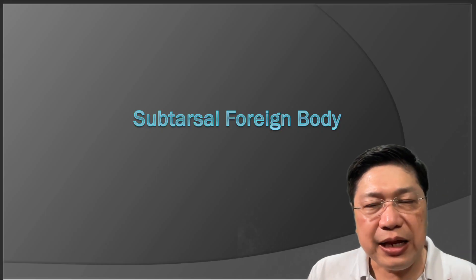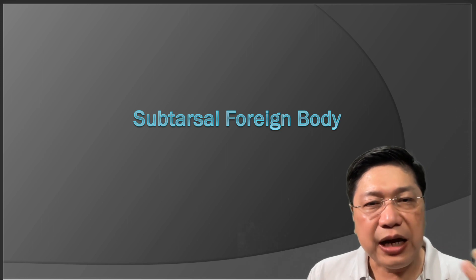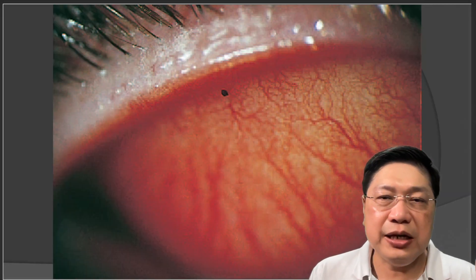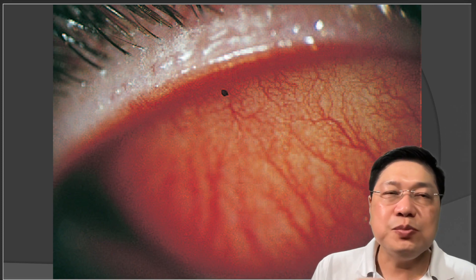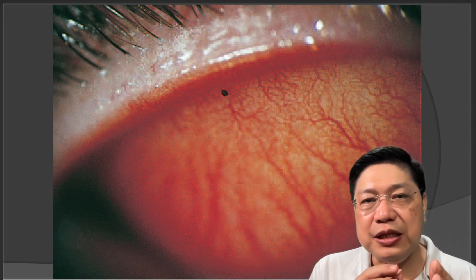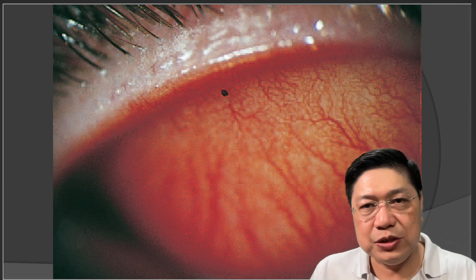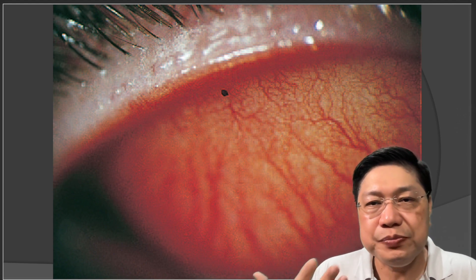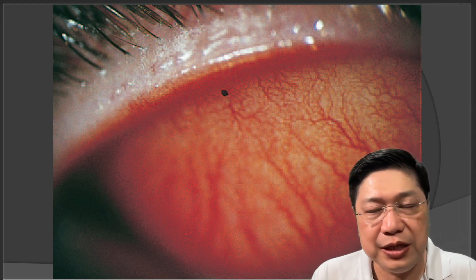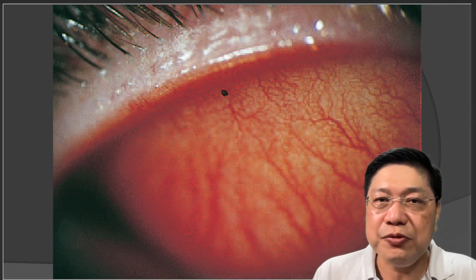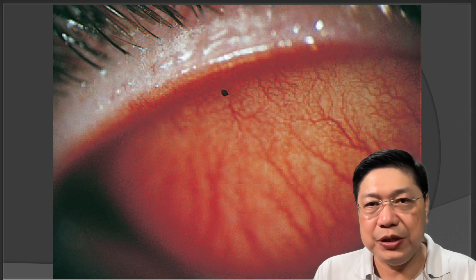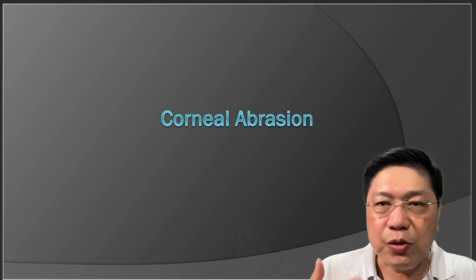Don't just look at the eyelashes — look underneath the eyelids. The eyelids might have some foreign body. In this case, the eyelid was flipped and there was a small metallic material trapped in the lashes. Every time the eye moves, this material scratches against the patient's cornea, causing a lot of damage. The patient will tell you they feel something in their eye but can't see anything wrong. You need to flip the lids, because trapped material like this will cause what we call a corneal abrasion.